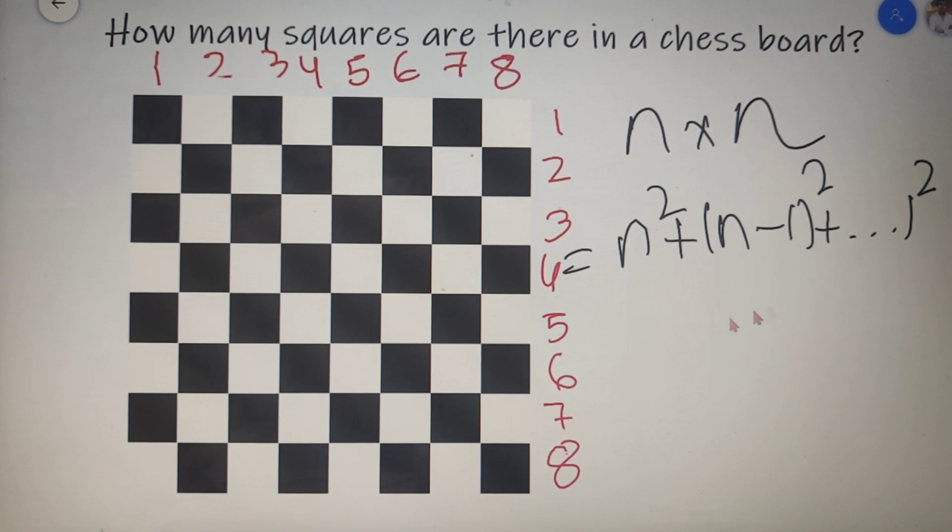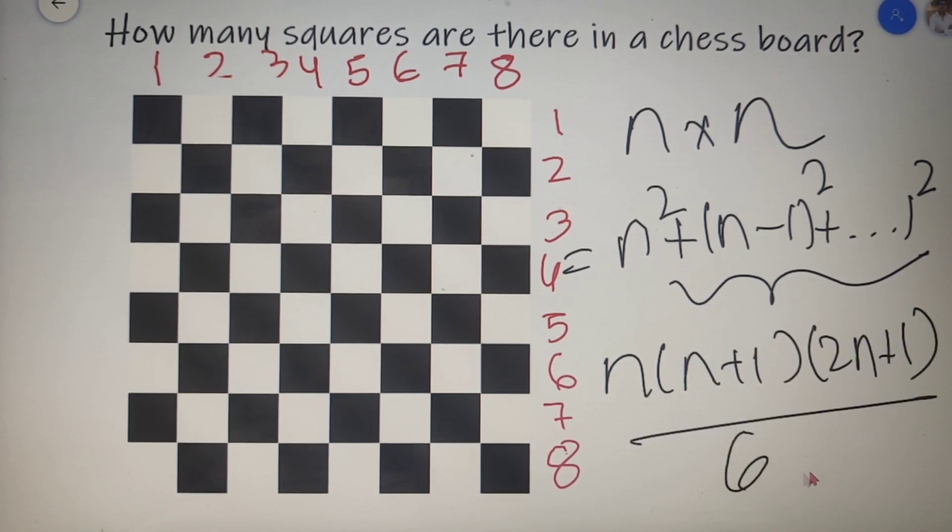Now if you don't know, then let me tell you that we have a formula for finding this value of n square plus n minus 1 whole square all the way up to 1 square which is equal to n into n plus 1 into 2n plus 1 whole divided by 6. So this is the formula by which you can calculate the value of sum of squares starting from 1 to n.